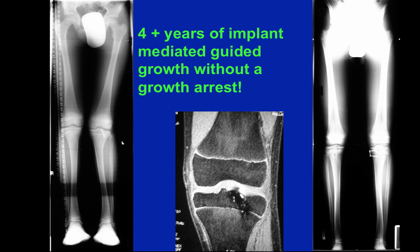This case highlights that this child had two years of growth modulation — albeit accidentally — on the lateral side of the knee, and was then corrected with two years of growth modulation on the medial side of the knee. There was no obvious growth disturbance as a result of this four years of treatment.